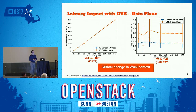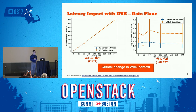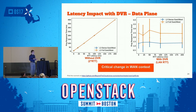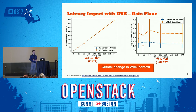Looking at the DVR results: on the left is the previous graph showing a linear tendency — as you increase latency, communication delay between VMs increases. With DVR on the right, the latency between VMs is almost flat. There is some noise, but it ranges from half a millisecond to four milliseconds — very low values. This is a critical change for wide-area deployments. Without DVR, it's not really feasible to communicate between VMs, but with DVR it becomes like being at the same site.